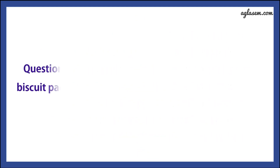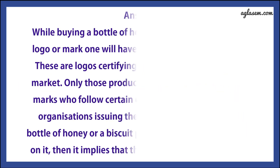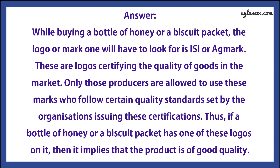Question number 7 says: Suppose you buy a bottle of honey and a biscuit packet — which logo or mark will you have to look for and why? Answer is: While buying a bottle of honey or a biscuit packet, the logo or mark one will have to look for is ISI or Agmark. These are logos certifying the quality of goods in the market. Only those producers are allowed to use these marks who follow certain quality standards set by the organization issuing these certificates. Thus, if a bottle of honey or a biscuit packet has one of these logos on it, it implies that the product is of good quality.